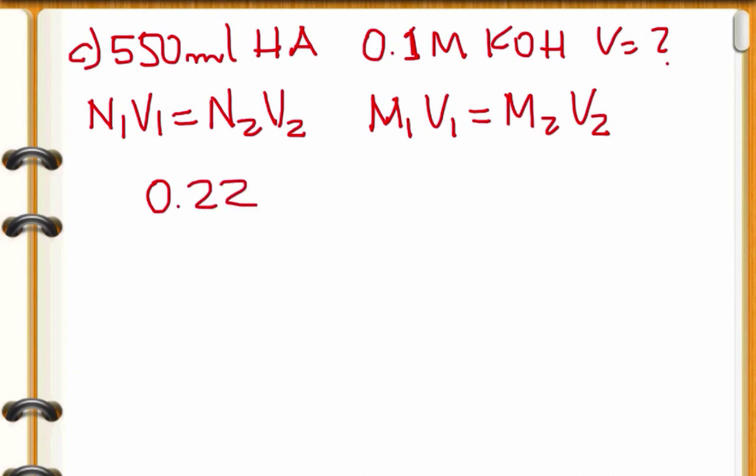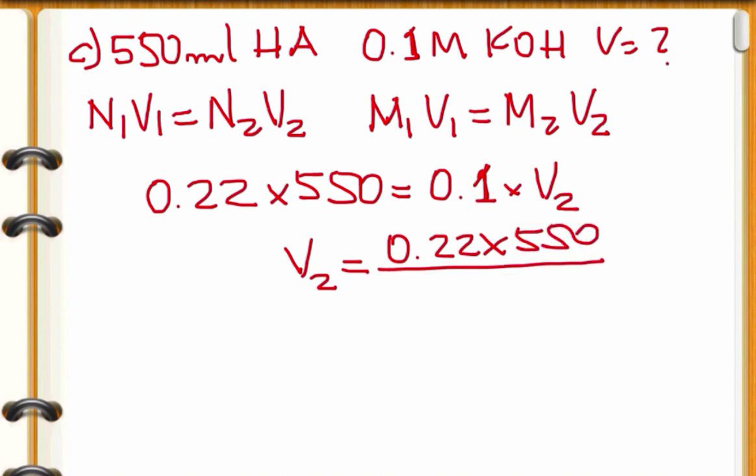Be careful when we have things like sulfuric acid and calcium hydroxide. So plug in 0.22 times 550 milliliters equals 0.1 times V2. You multiply 0.22 times 550 divided by 0.1. This is a simple one. It gives 1,210 milliliters of potassium hydroxide to be required. That's all.